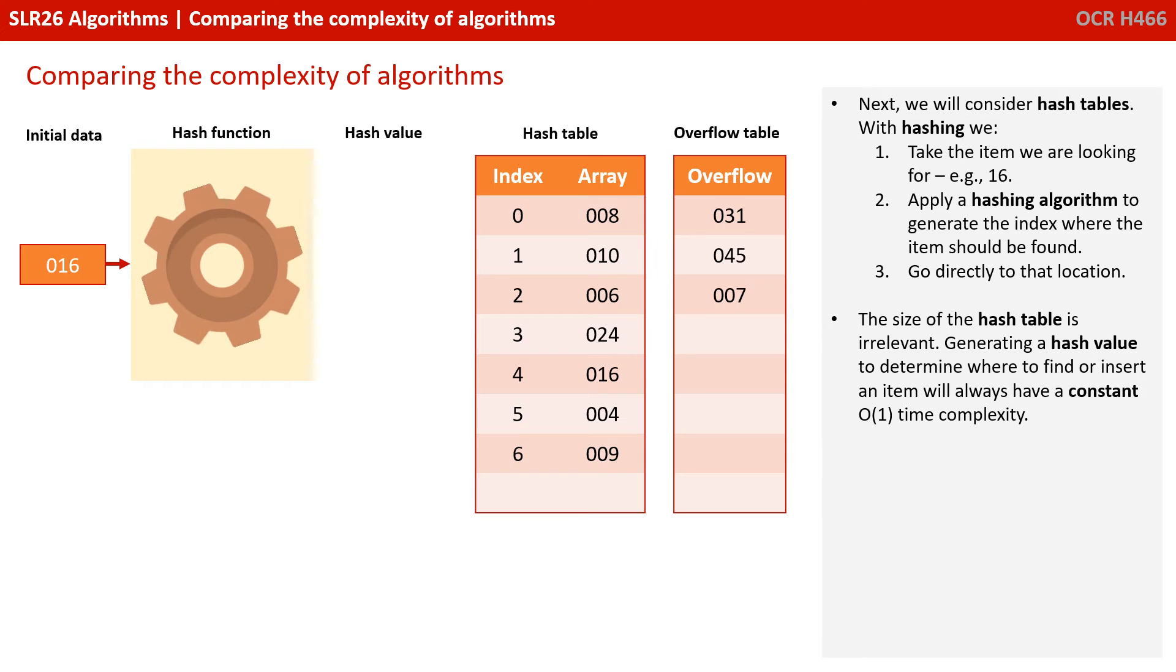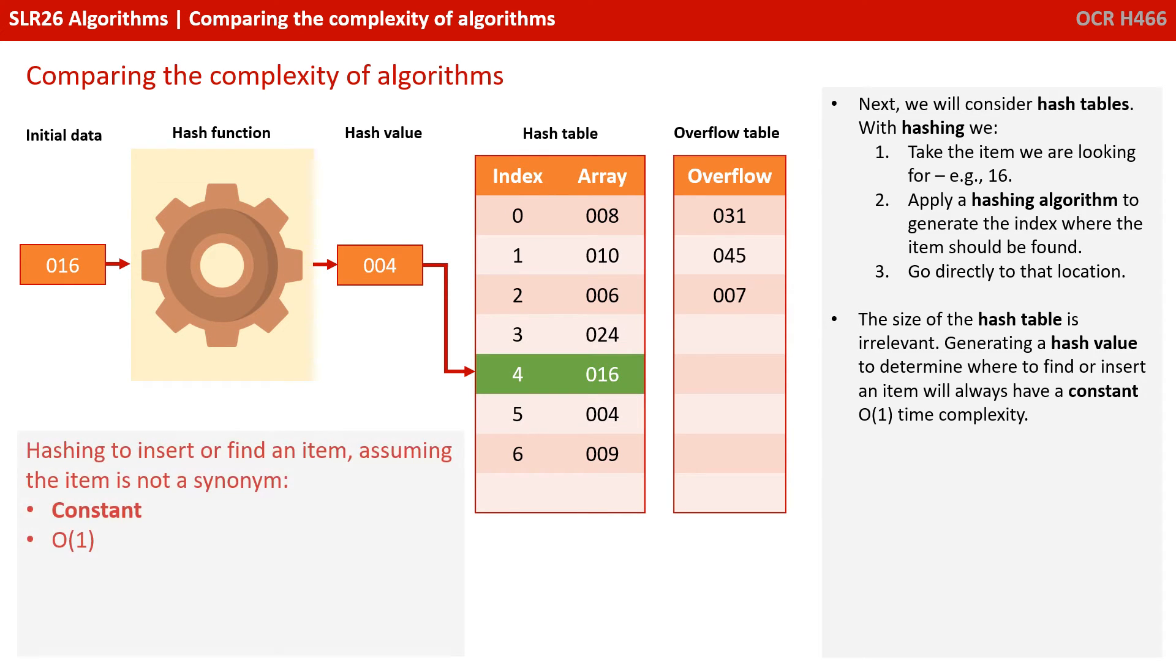Next we'll consider hash tables. With hashing, we take the item we're looking for, say 16, apply a hashing algorithm to generate the index where the item should be found, and then go directly to that location. The size of the hash table is therefore irrelevant. Generating a hash value to determine where to find or insert an item will always have an O(1) constant time complexity.